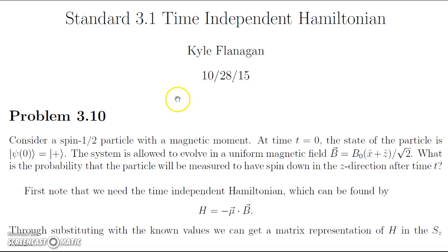The problem states: Consider a spin-1/2 particle with a magnetic moment. At time t equals 0, the state of the particle is ket 0 equal to plus, so it's spin-up at time 0. The system is allowed to evolve in a uniform magnetic field B, which is equal to B_0 times (x hat plus z hat), all scaled by 1 over root 2. What is the probability that this particle will be measured to have spin down in the z direction after time t?